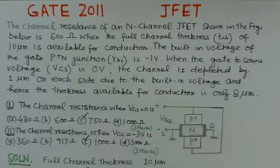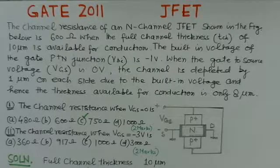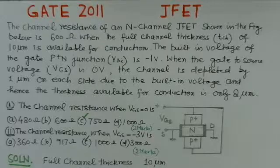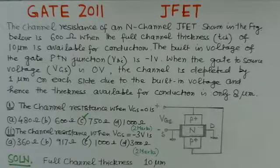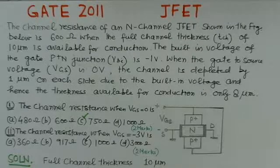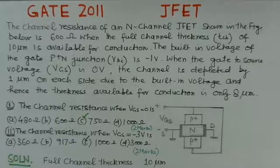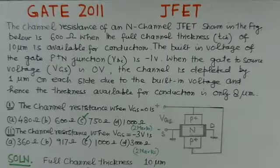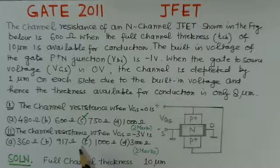The problem considered for the junction FET is the problem of gate 2011. This problem is more related to the channel resistance when the bias is applied to the junction FET. We observed that channel resistance increases with the depletion layer increase, and the depletion layer increases with the reverse bias voltage of gate-to-source voltage. Here are the problem questions and we have to find the corresponding channel resistance for different biases.